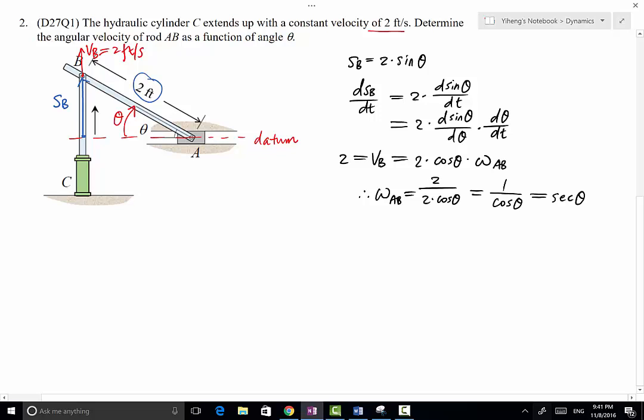Don't forget, in this problem, we define clockwise to be positive direction. So now we have omega_AB as a function of theta. We can determine omega_AB, we can evaluate it at any given theta value.